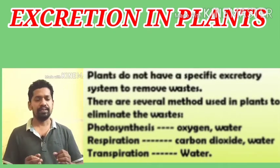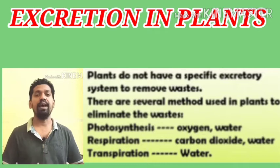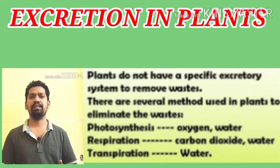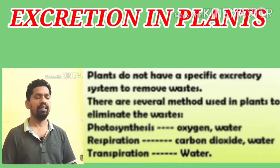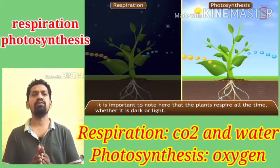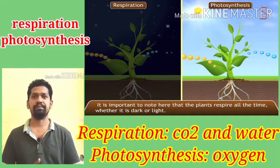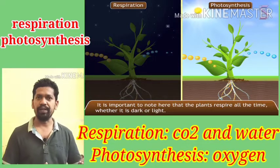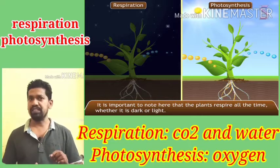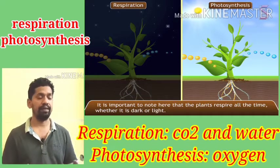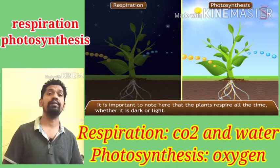Though plants don't have any specific organs or system for excretion, they have the ability to manage wastes and use them in different activities. In respiration, carbon dioxide and water vapour are waste substances. In photosynthesis, oxygen is the waste material. Plants have the power to utilize these wastes for other activities.